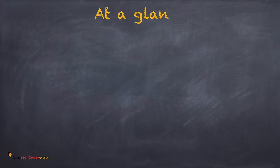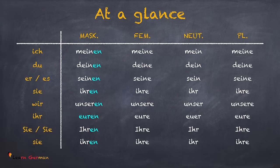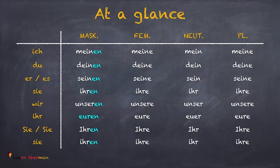Now let's summarize all the Possessive Pronomen im Akkusativ in a table. The only difference in the possessive pronouns in Akkusativ is for the masculine pronouns: mein changes to meinen, dein to deinen, sein to seinen, ihr to ihren, unser to unseren, euer to euren. Do notice the spellings here.